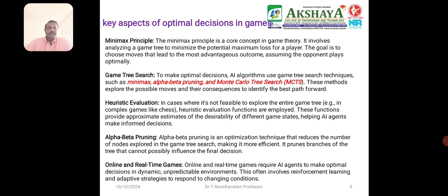Online and real-time games require AI agents to make optimal decisions in dynamic and unpredictable environments. This often involves informal training, adaptive strategies, and response to changes in conditions. The three important algorithms for game theory are: the Minimax algorithm, the Alpha-Beta Pruning algorithm, and the Monte Carlo Tree Search algorithm. This covers the basic introduction to game theory and optimal decision making in games.